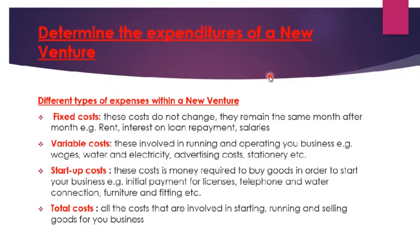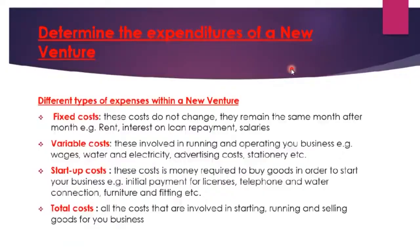The different types of expenses within a new venture are: number one, fixed costs; number two, variable costs; startup costs; and total costs. Fixed costs do not change — those are expenses that remain the same month after month, that is why we call them fixed. Examples of fixed costs are rent, interest on repayment, and salaries. For example, if you have agreed with a landlord to pay $2,000 for business rent, whether you have made a profit or not, you still have to pay that rent.